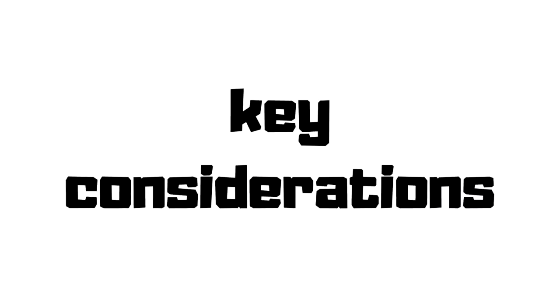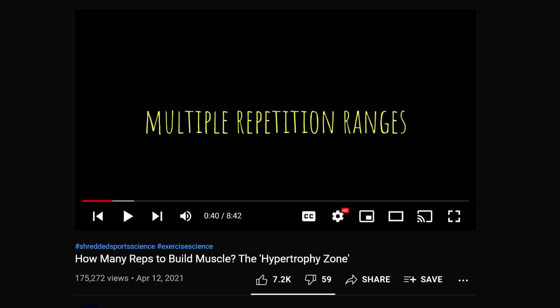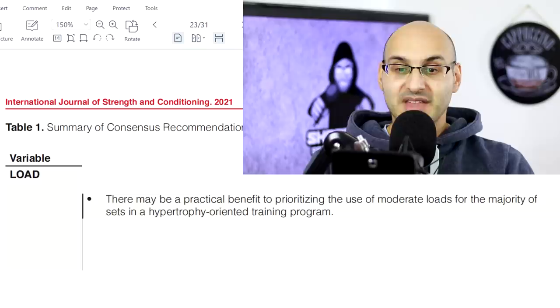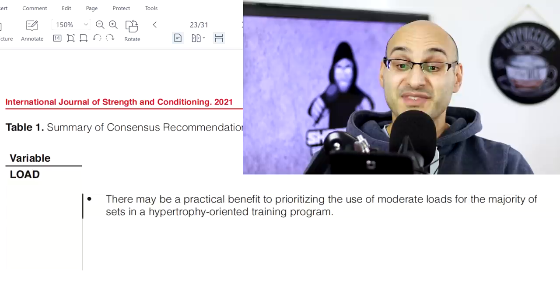What are the key considerations for increasing muscle size? First: load — how much weight are you putting on the bar? Individuals can achieve comparable muscle hypertrophy across a wide spectrum of loading zones. You can build muscle using multiple rep ranges, multiple set structures, and multiple intensities, as long as you have those underlying principles of overload, challenge, and consistency. There may be a practical benefit to prioritizing the use of moderate loads for the majority of sets in a hypertrophy-oriented training program.